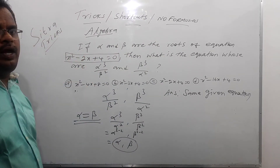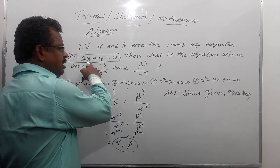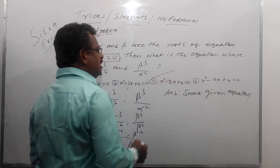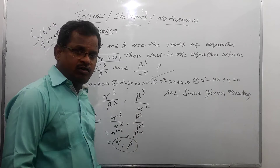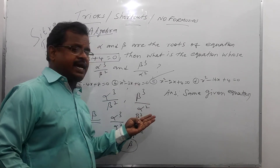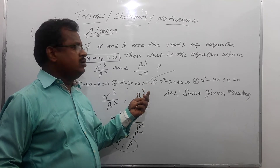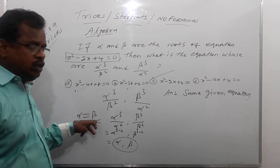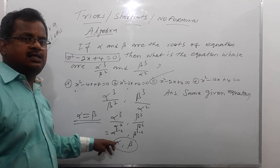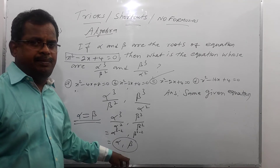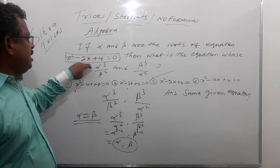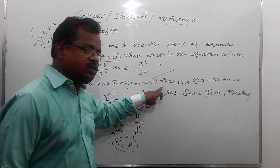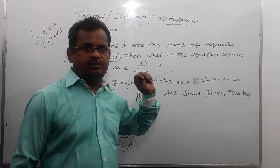The answer is the same given equation. The given equation is x squared minus 3x plus 4 equal to 0. Within 2 seconds, you get the answer. Substitute alpha equal to beta, you get the same roots alpha comma beta, so the answer is the given equation: x squared minus 3x plus 4 equal to 0.